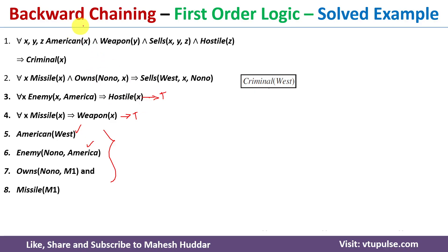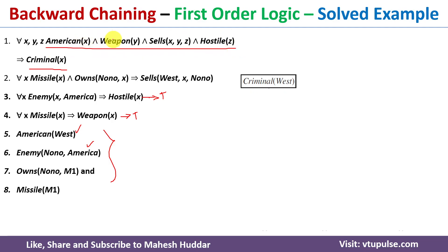Now, we need to apply the backward chaining technique to prove that West is a criminal. Whenever we use backward chaining, we select a rule where what we want to prove is present on the conclusion side. We want to prove 'Criminal West,' and this appears in the first rule as 'Criminal x.' We check whether Criminal West is already present in the facts — it is not, so we need to prove all its premises are true: American x, Weapon y, Sells x y z, and Hostile z.